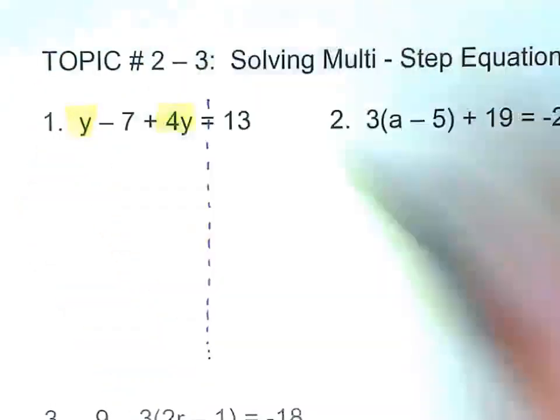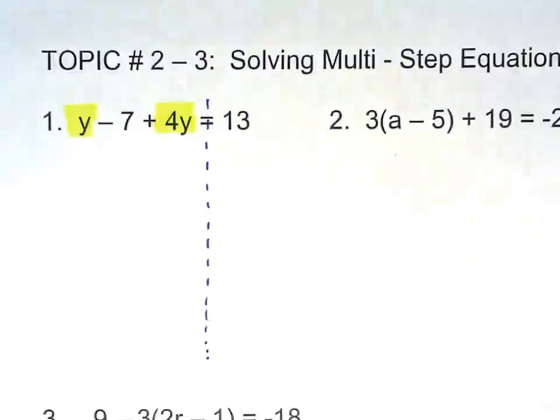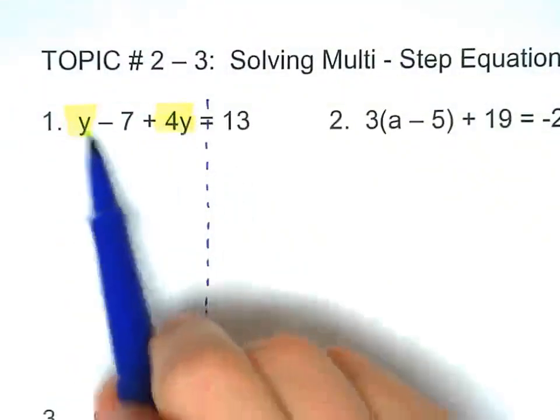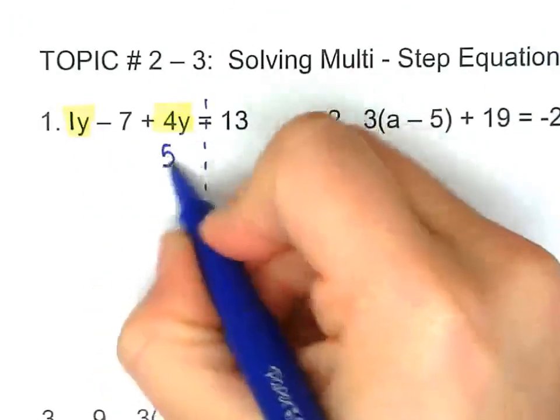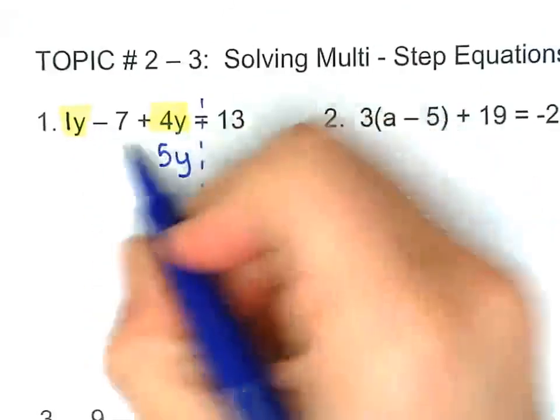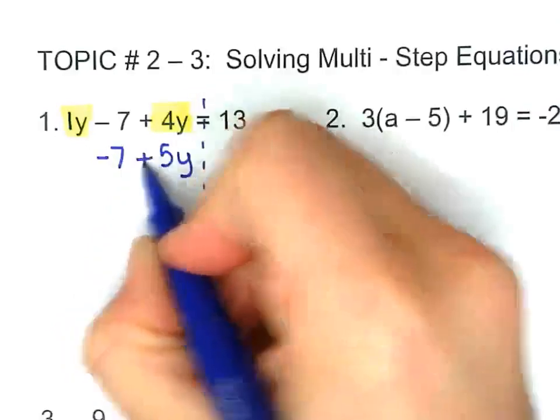I'm going to combine y with 4y. And remember, I can only combine what's on the same side. So here I have an invisible 1. 1 plus 4 is 5y. And everything else that I didn't use, I just bring them down.